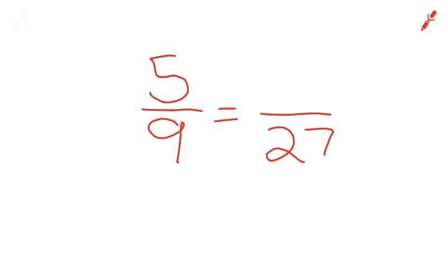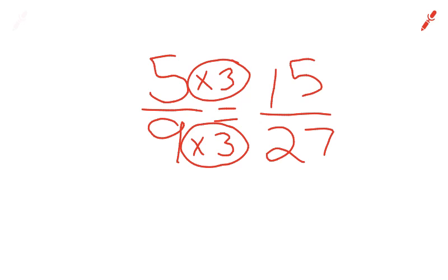We'll do B also. We start with 5 over 9 equals something over 27. We have to ask ourselves again, 9 times what will equal 27? 9 times 3 is 27. If we do times 3 here, we must do times 3 up here as well. 5 times 3 is 15. That is our answer.